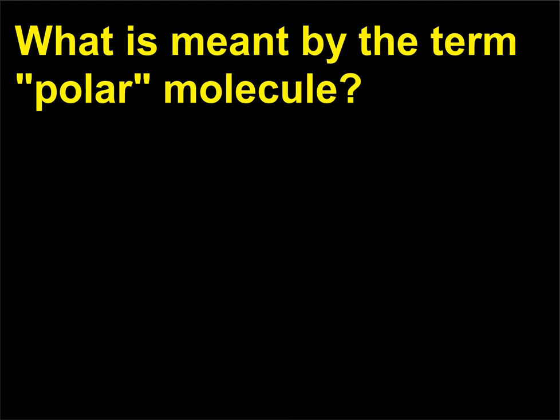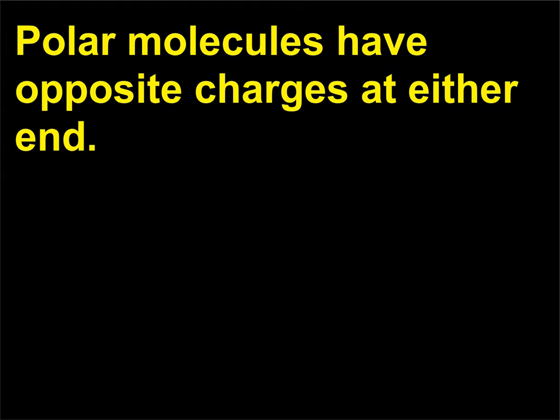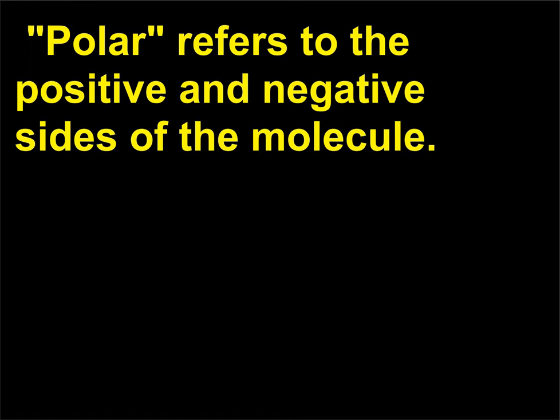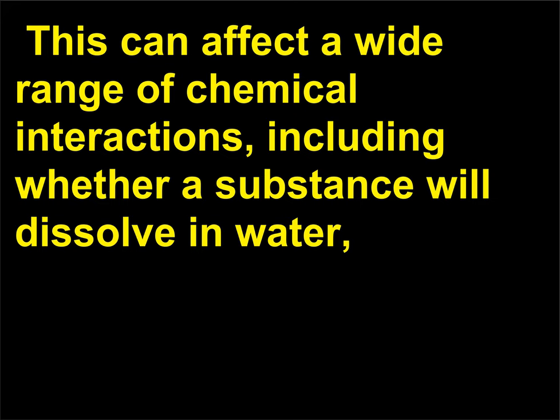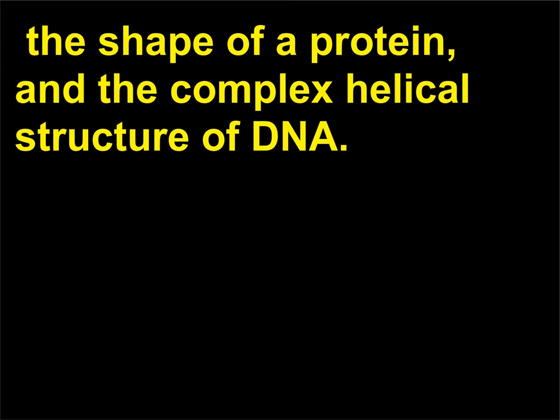What is meant by the term polar molecule? Polar molecules have opposite charges at either end. Polar refers to the positive and negative sides of the molecule. If a molecule is polar, it will be attracted to other polar molecules. This can affect a wide range of chemical interactions, including whether a substance will dissolve in water, the shape of a protein, and the complex helical structure of DNA. Water is an example of a polar molecule.